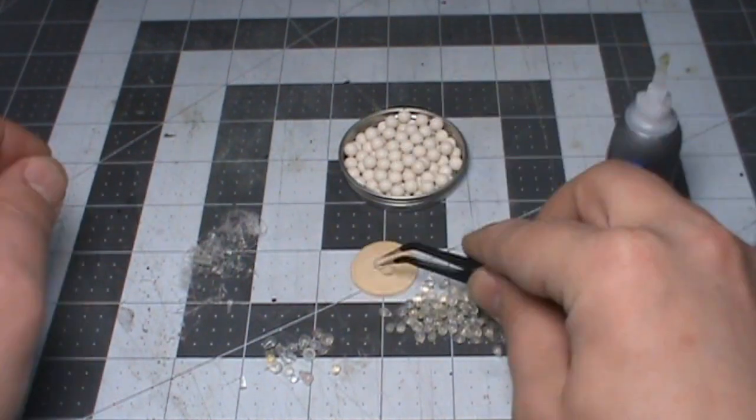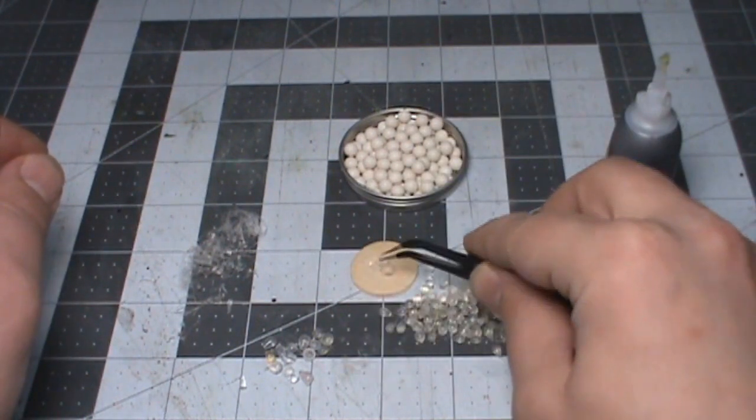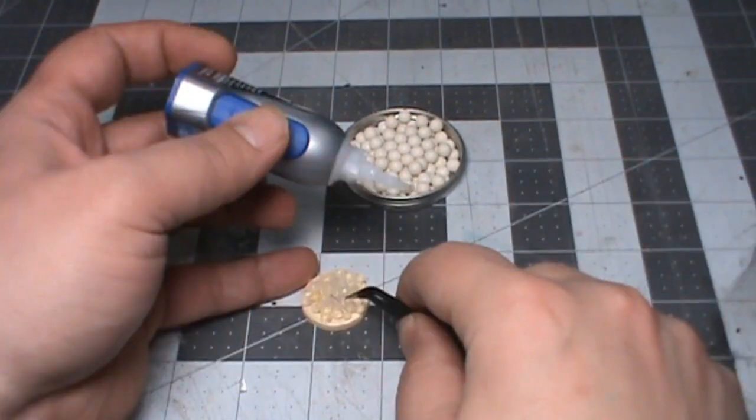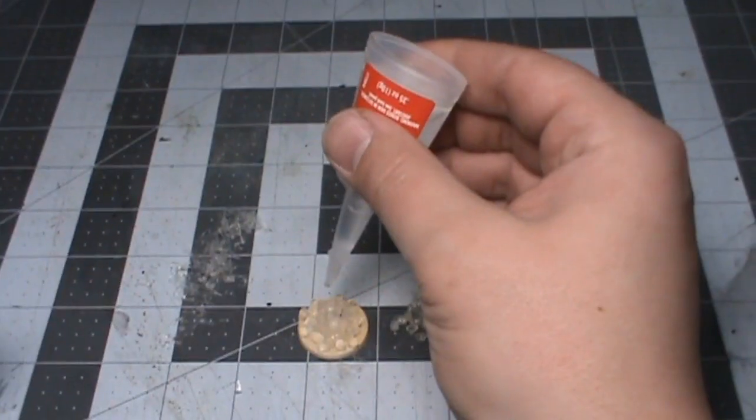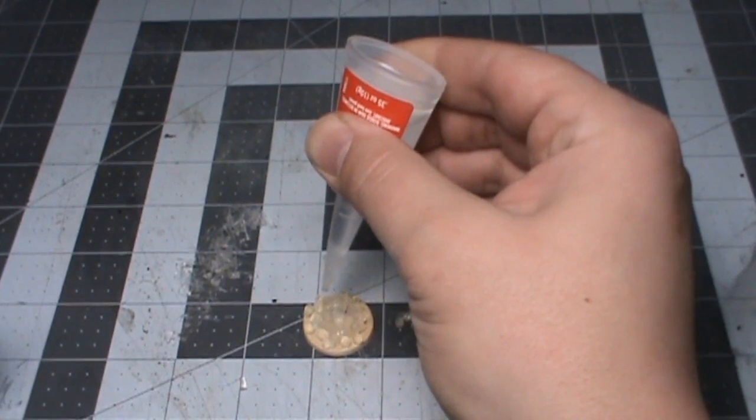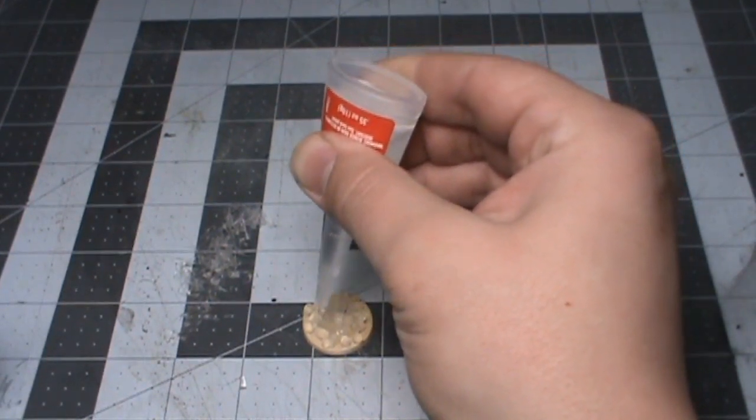So just glue some on and then keep stacking them with more glue, more beads or glue gun blobs, whatever you're using until you get the height you want. Then what I did to make sure they all stay is cover it in a liquid super glue because it gets between all the cracks and everything.